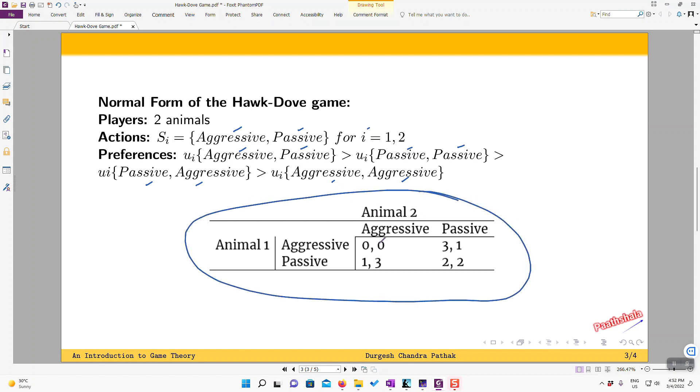So this is the payoff matrix that represents those kind of outcomes. You can change the numbers, only you have to maintain the order and you will be through. So now let's talk about the Nash equilibrium that is possible here.